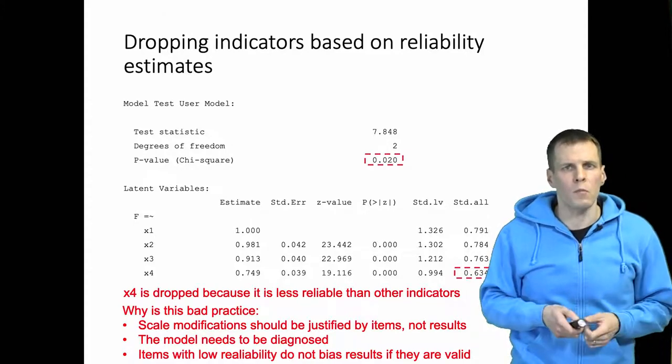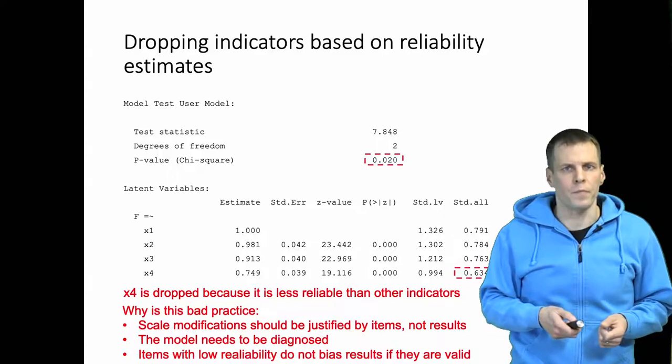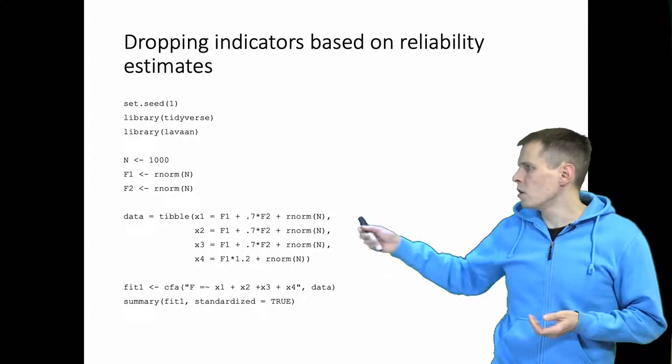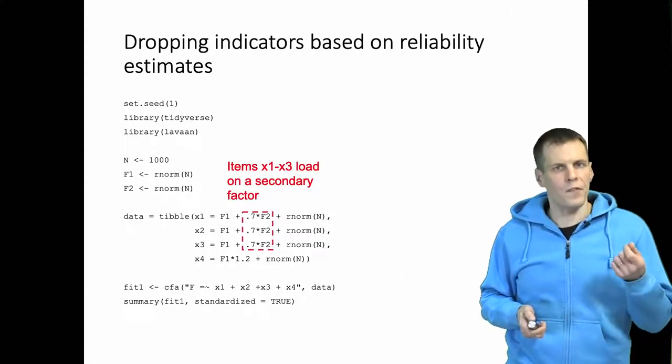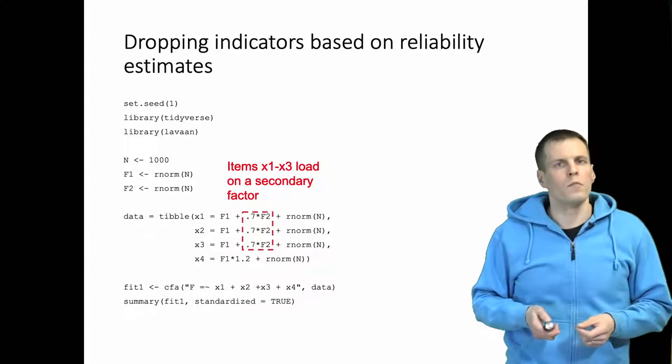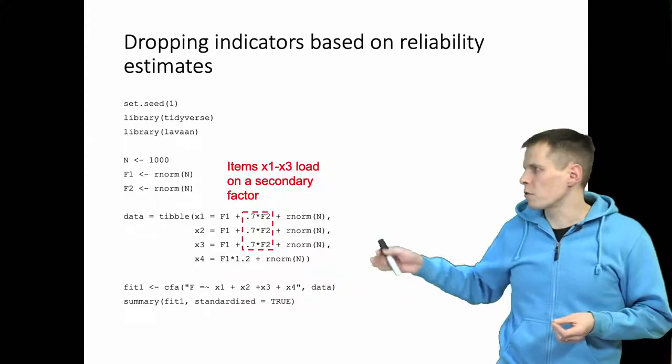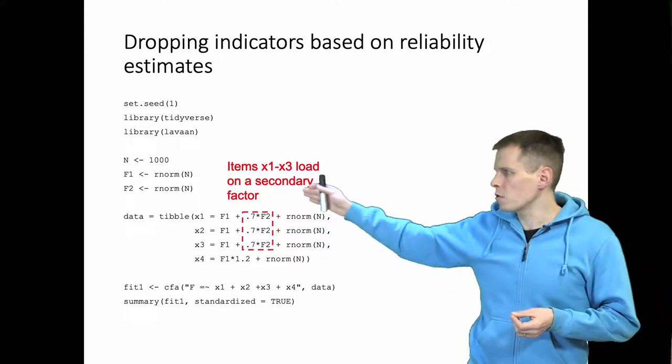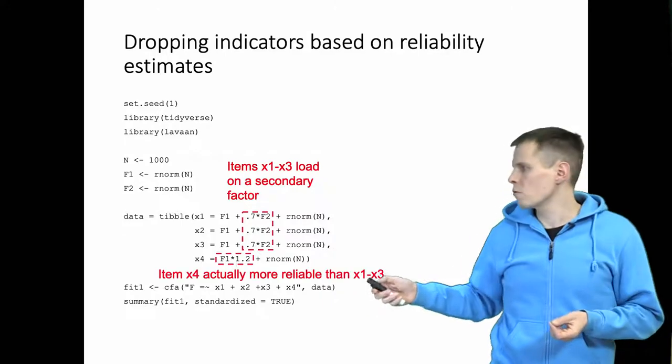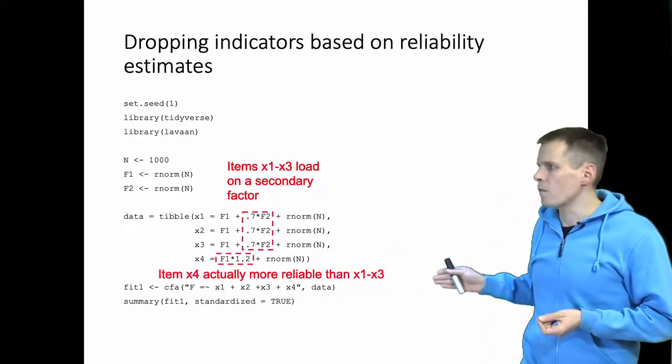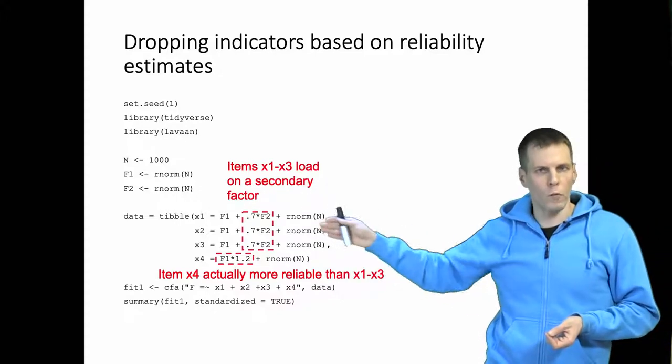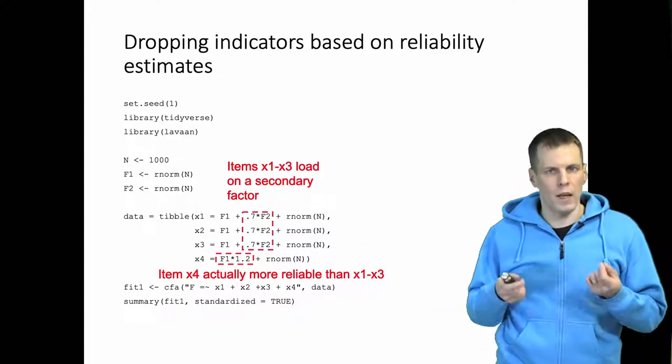So what is the model here that generated the data like? In this case we actually had a secondary factor F2 that loaded on x1, x2, and x3, and that explained why x4 was loading less, because the main factor actually captured some of the secondary factor which was not included in the model. And if we take a look at this data generating model more closely, we can see that x4 is actually more reliable—it has loading of 1.2 compared to loading of 1—it is more reliable than x1 or x2.